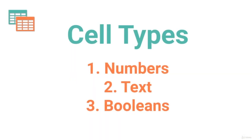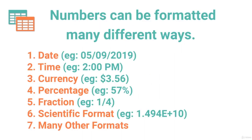A cell can be one of three different things: a number, text, or a Boolean. If a cell contains a number, that number can be formatted many different ways — as a date, as time, as currency, as a percentage, as a fraction, or in scientific format. You may wonder how a number can be formatted as a date — let's explore that.